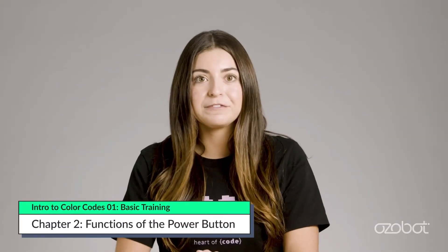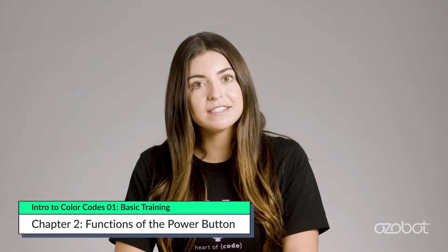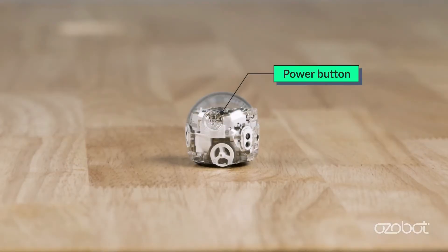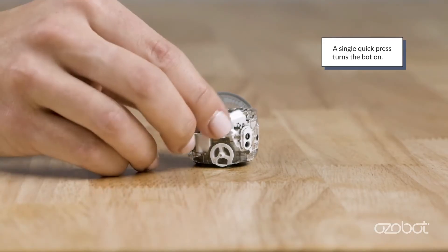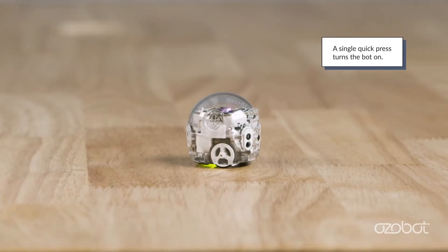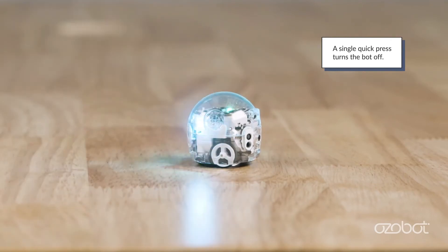The power button has a few functions. First, locate the power button above Ozobot's left wheel. A single quick press turns the bot on. You should hear a small click and all the lights should turn on. When the bot is on, a single quick press will turn the bot off. All the lights should turn off.